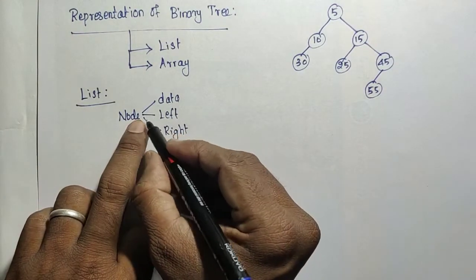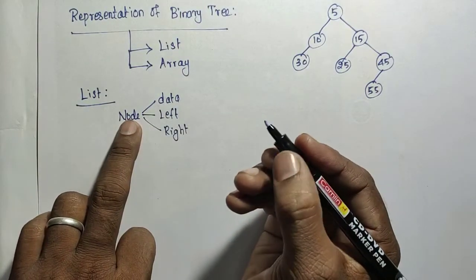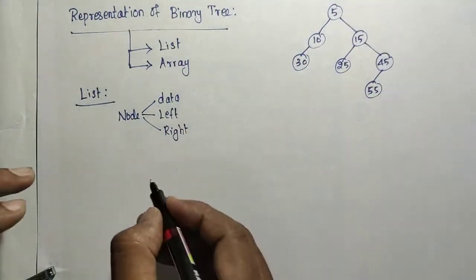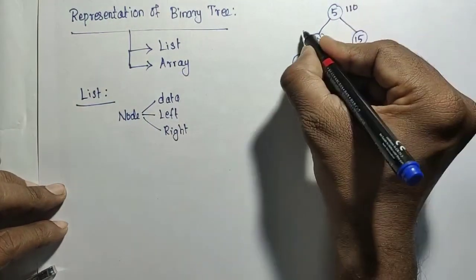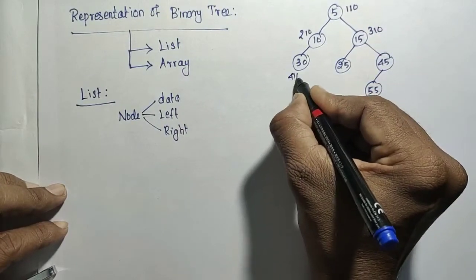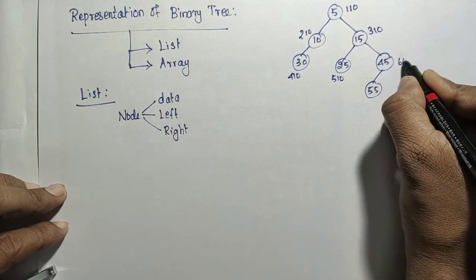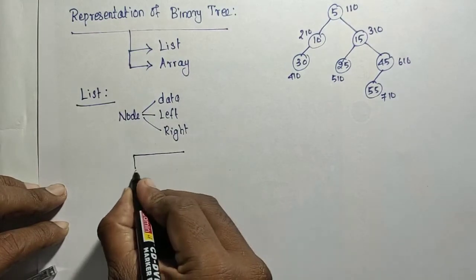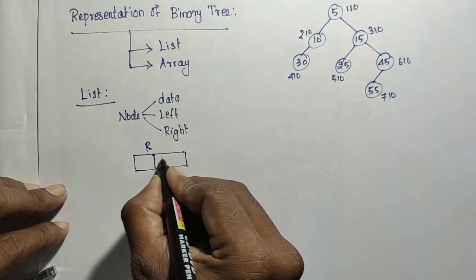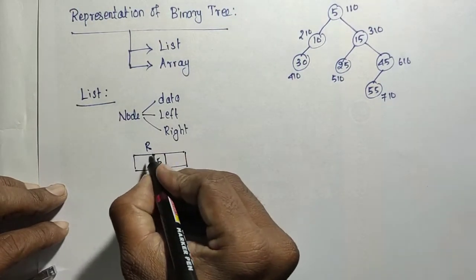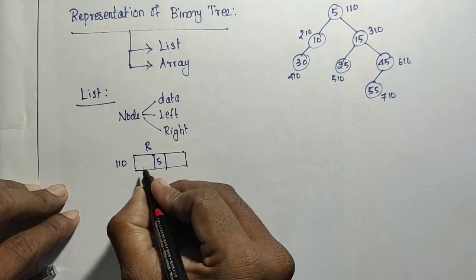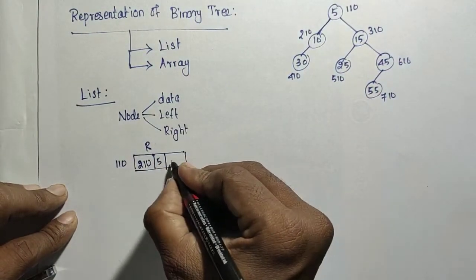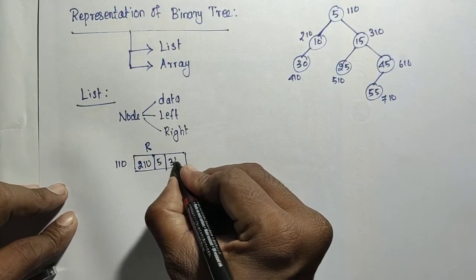The tree is represented as the root node. Here, say this address is 1,10 and 2,10, then 3,10, 4,10, 5,10, 6,10 and 7,10 like that. So here, 5 is the root. This address is 1,10 and it contains the left subtree address: 2,10, and the right subtree address: 3,10.